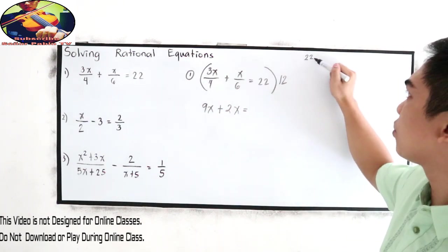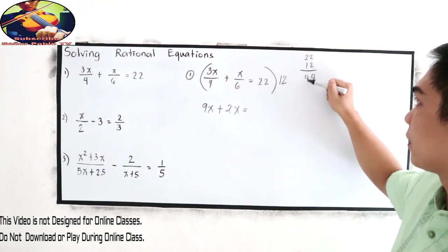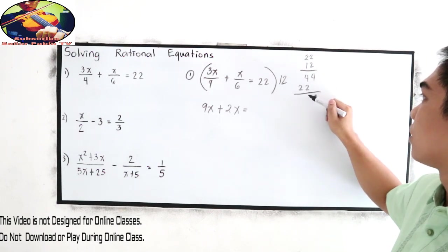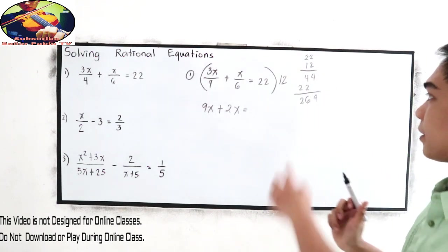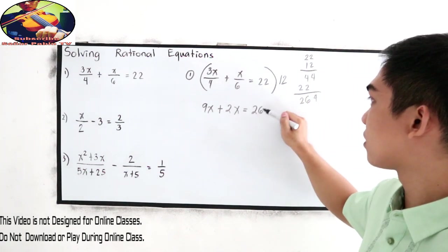So what is 22 times 12? That is 264. So we have 264.